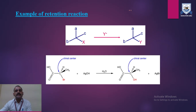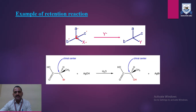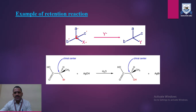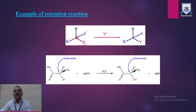We can understand this mechanism with the help of this reaction. The central carbon is a chiral carbon, so A, B, C, and X — four different substituents — are present on this carbon. A Y group is going to react with this chiral carbon, and a substituted product is formed where Y is substituted in place of X. You can see in the product that Y is aligned at the same position from where X was relieved. So in this case, the configuration of the molecule is retained — it is a good example of retention of configuration.